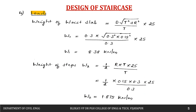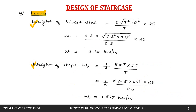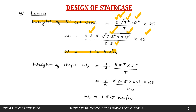Now we calculate the loads on the staircase: weight of the slab, weight of the steps, finishing load, and live load. Weight of the waist slab equals D × √(T² + R²) / T × 25, where D = 0.3, T = 0.3, R = 0.15, giving 8.38 kN/m.